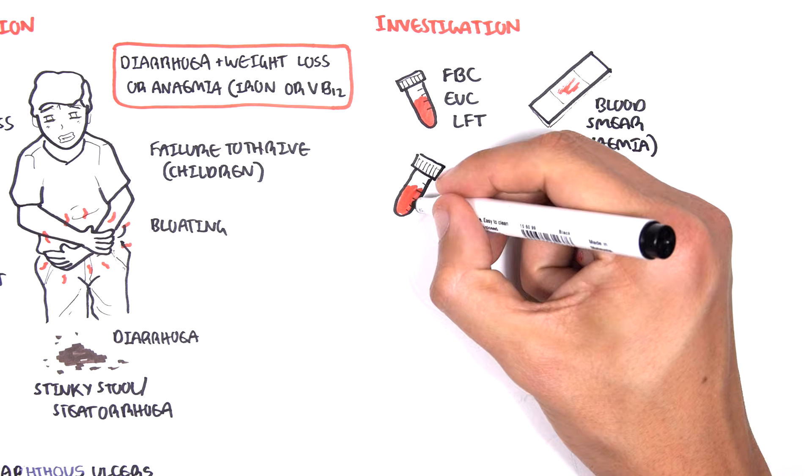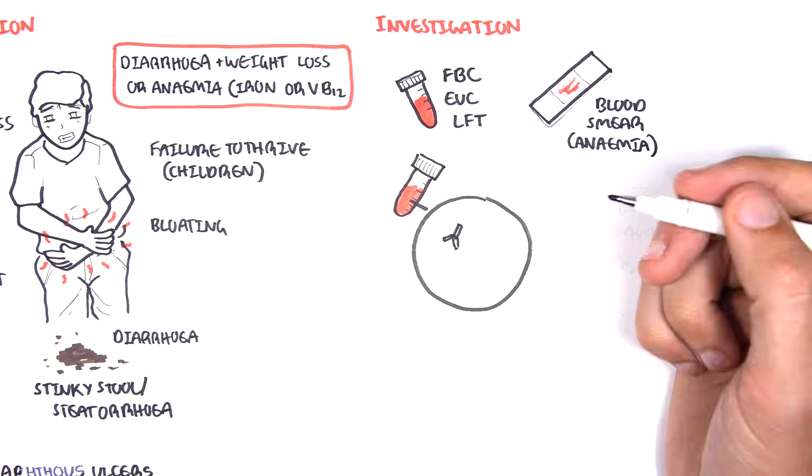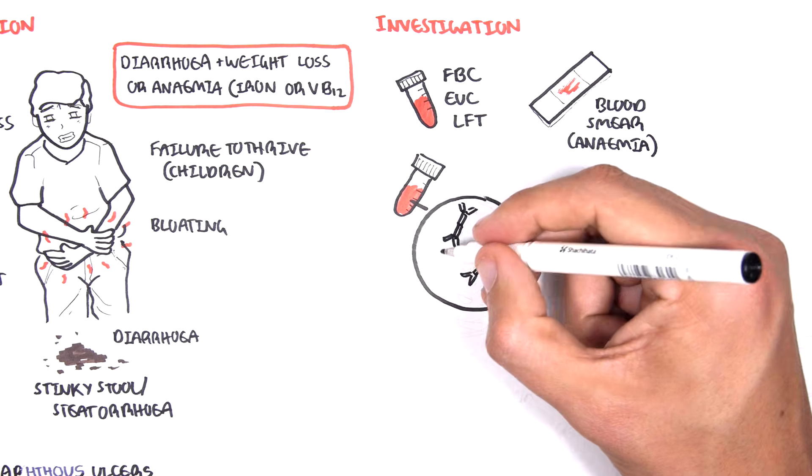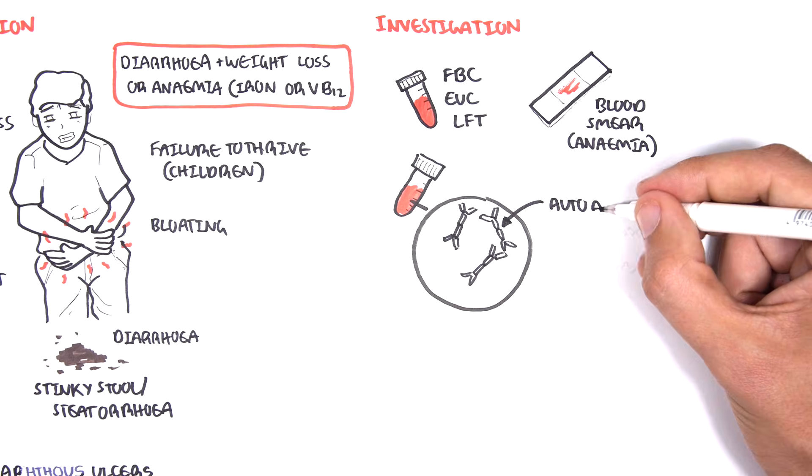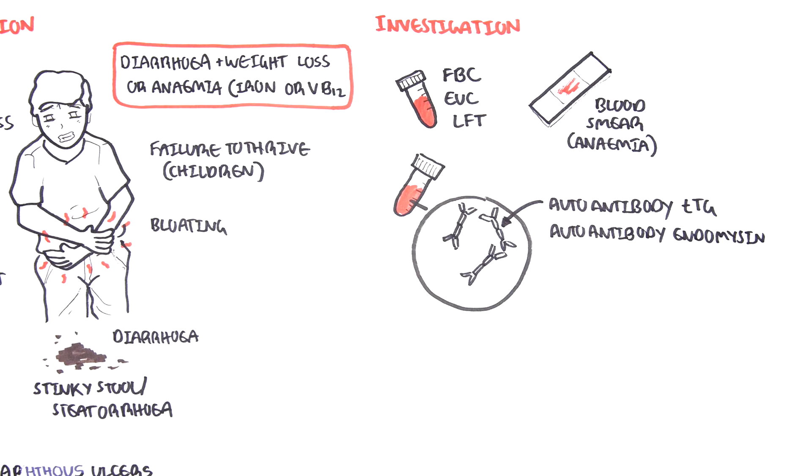Serology tests can also be ordered to test for the presence of autoantibodies seen in celiac disease, specifically autoantibodies to transglutaminase, endomysium, as well as gliadin.